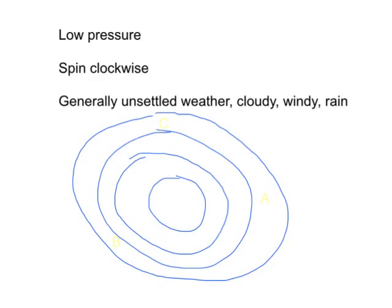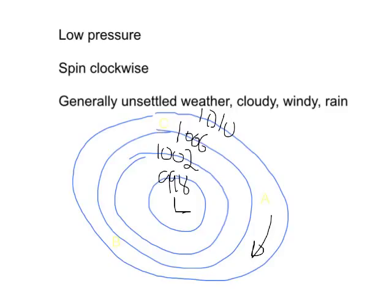Let's have a look at the two pressure systems. So let's say this is a low. The isobar values go 998, 1002, 1006, 1010 — they'll always go up in the same increment; I'm going up in 4 here. The key thing you need to know is the way these systems spin. A low pressure system spins clockwise — the air around it moves in a clockwise direction. If you know that, you can tell a little bit about the wind speed or wind direction.